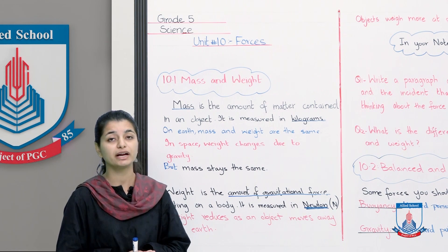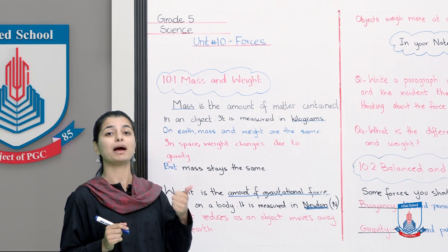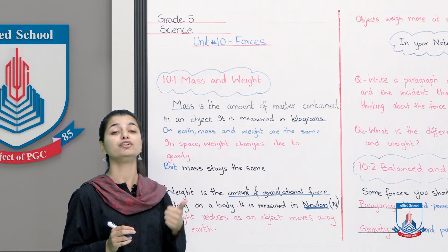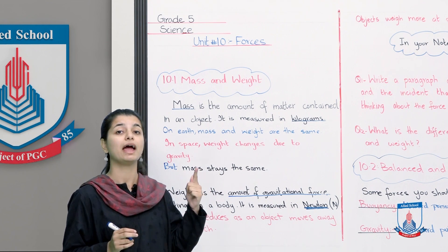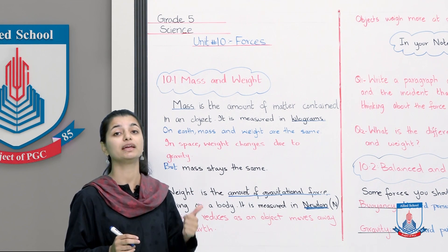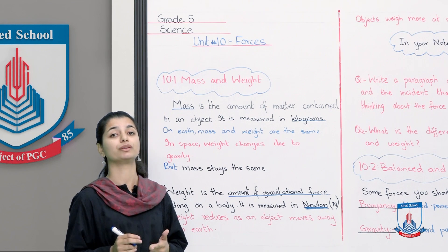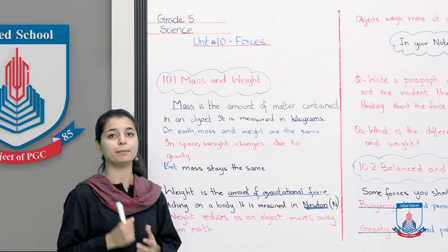Weight reduces as an object moves away from earth. So we have found two differences between mass and weight. First is that mass's definition is different - amount of matter in an object, and weight's definition is amount of gravitational force acting on an object. And second thing is that mass's measuring unit is kilograms, whereas weight's measuring unit is newtons. And we'll go to the next board to read a little more about this.